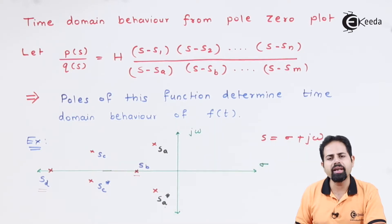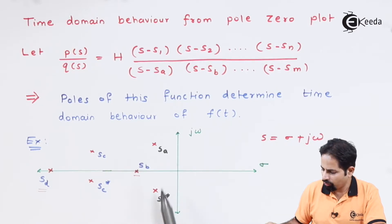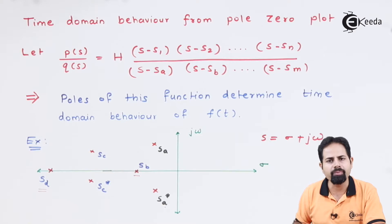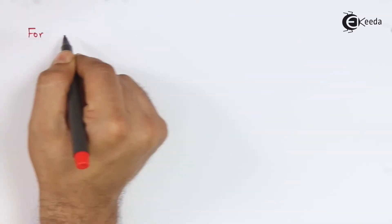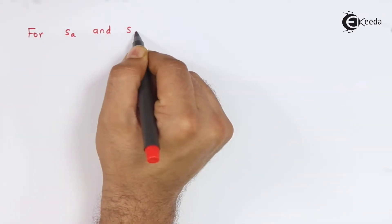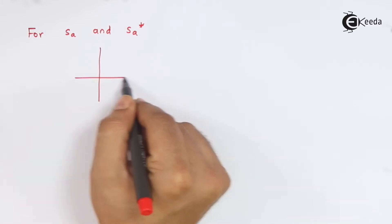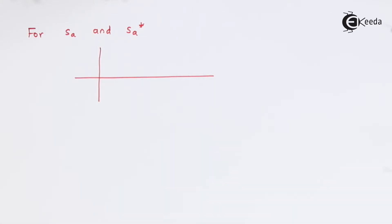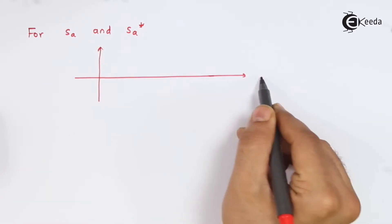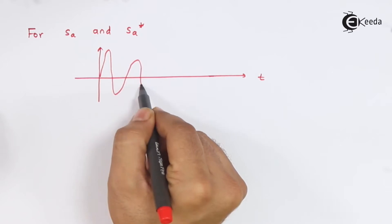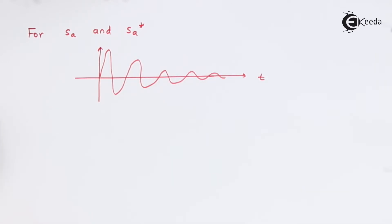So this sigma being negative, that means it will be a decaying function. And if you try to draw the graph for this complex conjugate pair of poles, it will be something like this. So for sa and sa conjugate, the time domain behavior is what we are drawing.